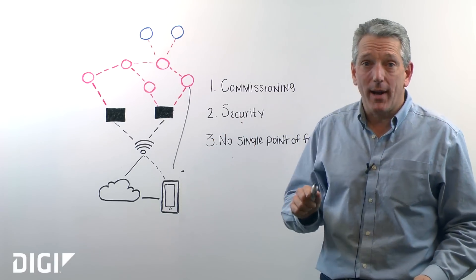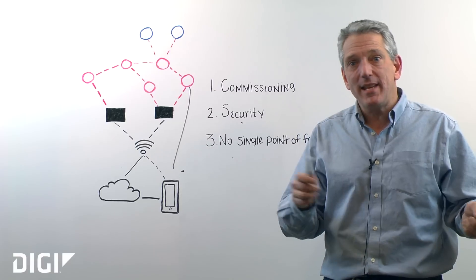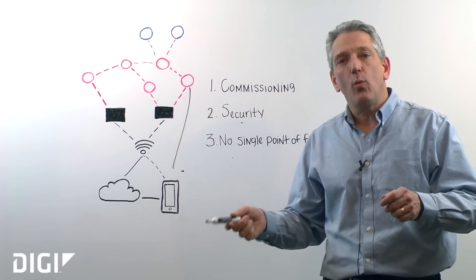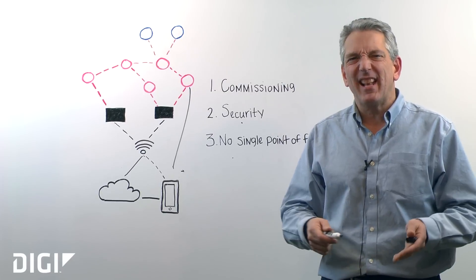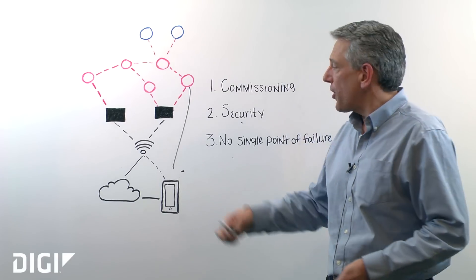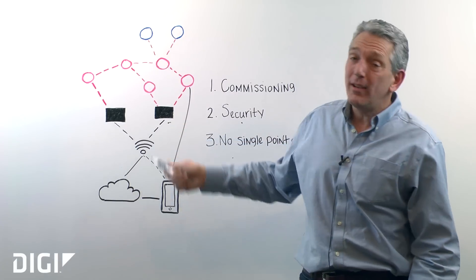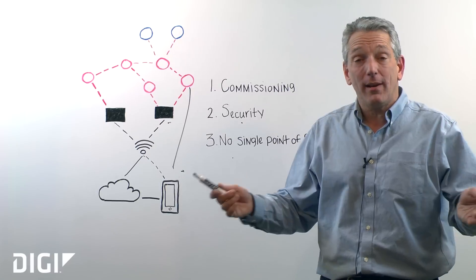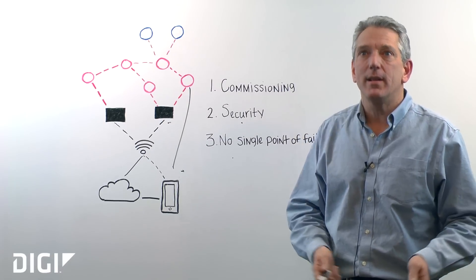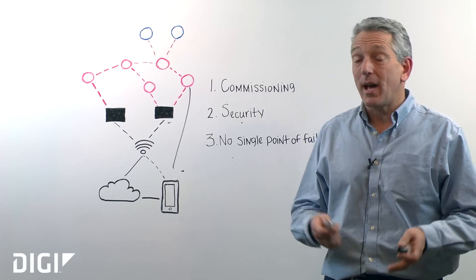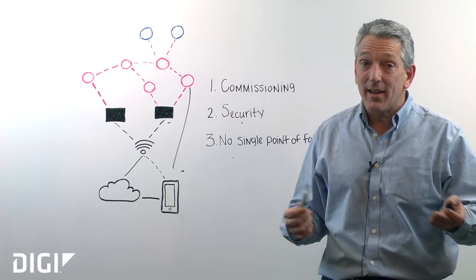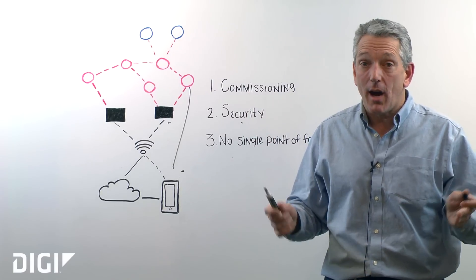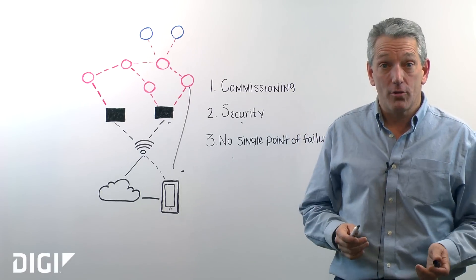Another key point about failures is how do you get in and out of the network? With typical mesh networks, a lot of times there's only one way in or out — think of it as one door. With Thread, you have the notion of a border router, and you can have as many border routers as you want, typically two or more. Just like a house that has multiple doors, you have multiple ways in and out of the network, so you never have to worry about being cut off if someone takes away one of your doors.